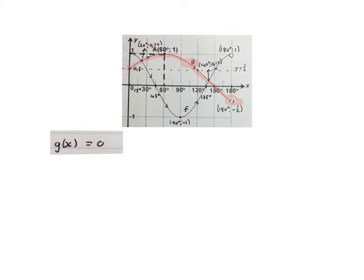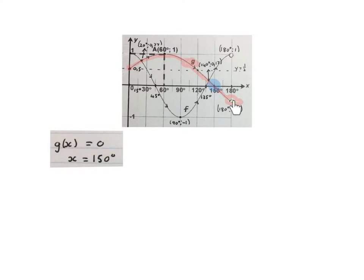Now we're going to do some questions on the g graph. The g graph is now shown in red. They're asking where is g of x equal to 0. The answer is x equals 150 degrees — that is where this graph equals zero.